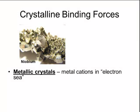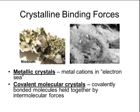A third type of binding force is called a metallic crystal. This is the same as the arrangement in metallic bonding, where we have a sea of electrons that can flow in and around all of the different metal cations of that crystal. The last type of binding force is called a covalent molecular crystal. This occurs when covalently bonded molecules are held together by intermolecular forces. Don't get a covalent molecular crystal and a covalent network crystal confused — in the network crystal, the atoms are held together by covalent bonds, but in the molecular crystal, the atoms are held together by intermolecular forces.